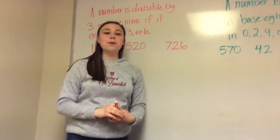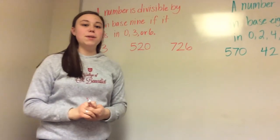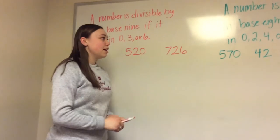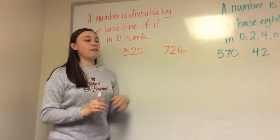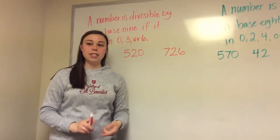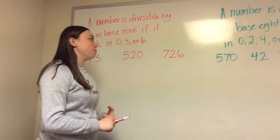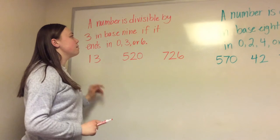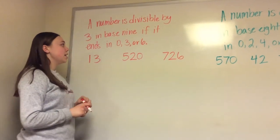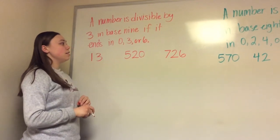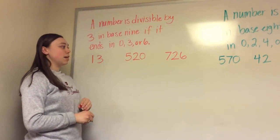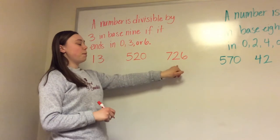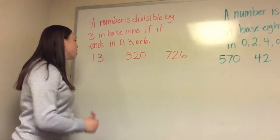Alright, hi everyone. So today we're going to be talking about divisibility results in other bases. I've narrowed it down to two rules that I think are going to be important. The first one is: a number is divisible by 3 in base 9 if it ends in 0, 3, or 6. And we're going to use these three example problems to show why this works.